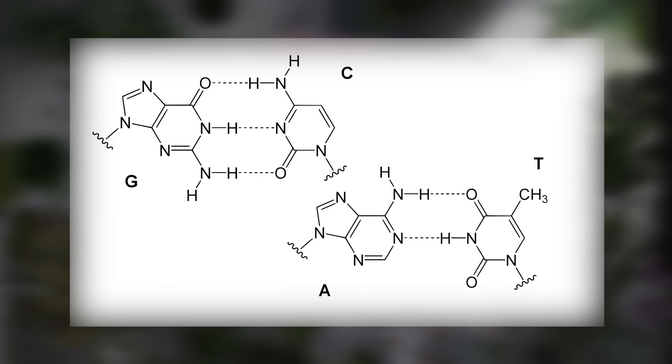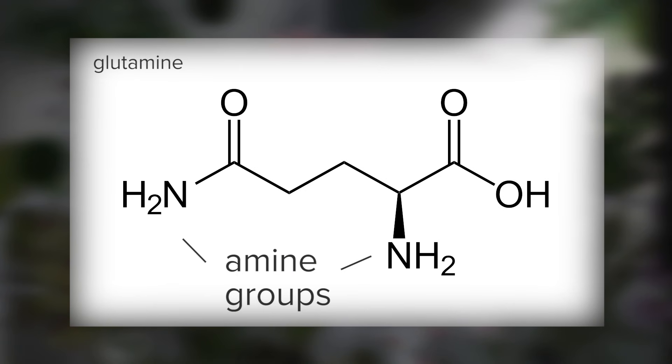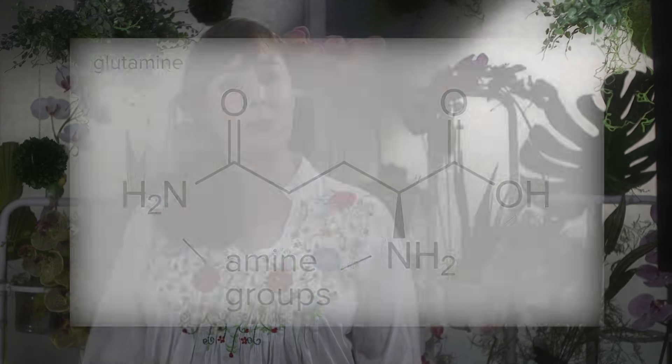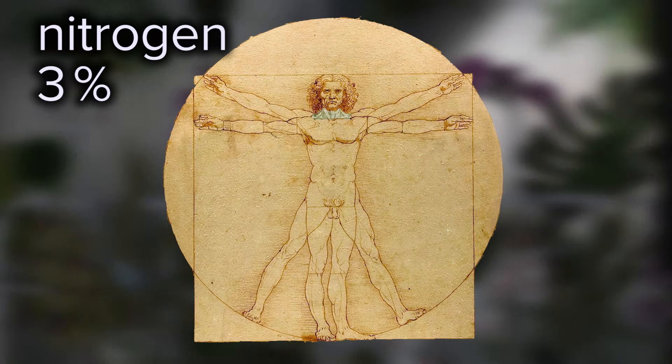Nitrogen is an essential component of DNA. Think of those nitrogenous bases that make up the rungs of the DNA ladder. Also, be on the lookout for nitrogen in amine groups, like on the ends of amino acids — these amine groups confer basic, as opposed to acidic, behavior. Nitrogen makes up about 3% of humans, and is also especially abundant in the air we breathe, at about 78%.